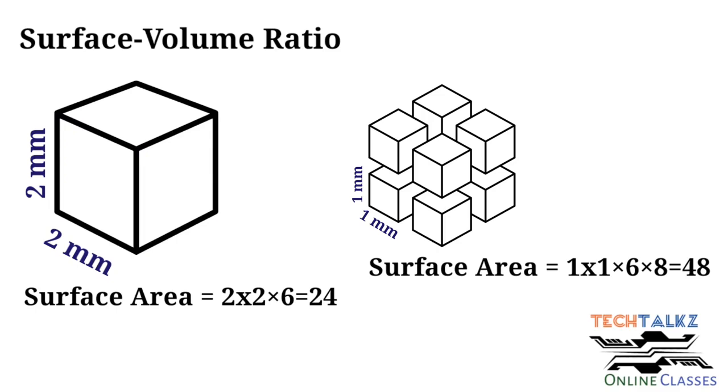Now let us calculate the volume. The volume formula is height multiplied with width multiplied with length and multiplied with number of cubes. So the volume for 2mm cube will be 2 into 2 into 2 into 1. There is only one cube. So the answer will be 8.